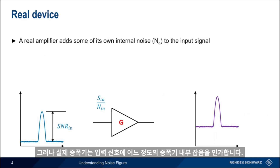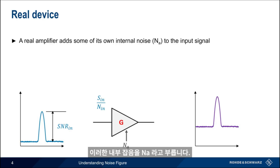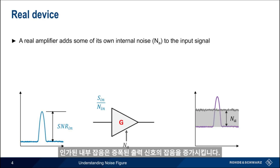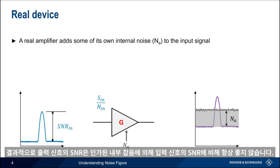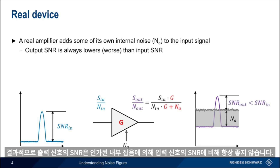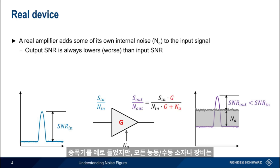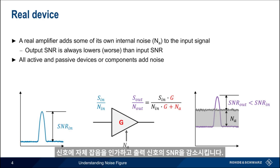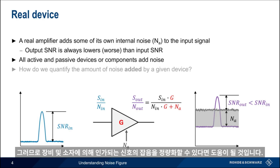However, all real-world amplifiers have some amount of internal noise that gets added to the input signal. We'll call this internal noise NA. This added internal noise increases the amount of noise present in the amplified output signal. As a result of this added noise, the output signal-to-noise ratio is always lower — that is, worse — than the input signal-to-noise ratio. Although we're using an amplifier as an example here, all active and even passive devices or components add noise to a signal and reduce output SNR. So clearly it would be helpful if we had some way to quantify just how much noise a device or component adds to signals passing through it.